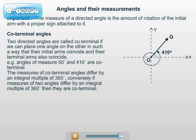The measures of coterminal angles differ by an integral multiple of 360 degrees. Conversely, if the measures of two angles differ by an integral multiple of 360 degrees, then they are coterminal.